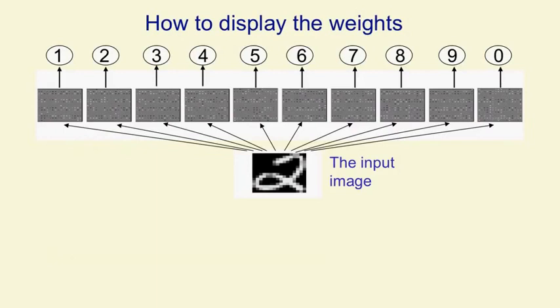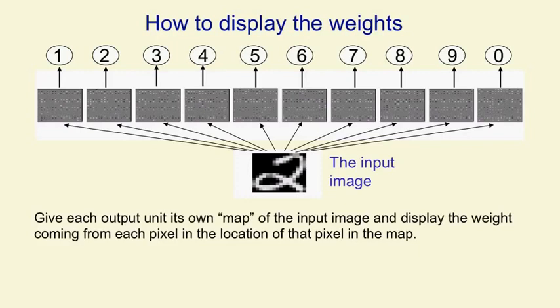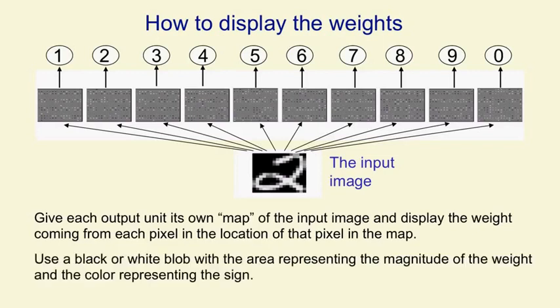So first we need to decide how to display the weights. It seems natural to write the weights on the connection between an input unit and an output unit, but we'd never be able to see what was going on if we did that. We need a display in which we can see the values of thousands of weights. So the idea is for each output unit, we make a little map, and in that map, we show the strength of the connection coming from each input pixel in the location of that input pixel. And we show the strength of the connections by using black and white blobs, whose area represents the magnitude, and whose color represents the sign.